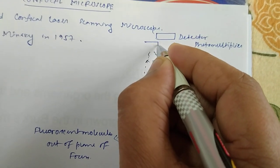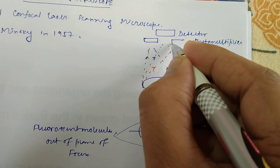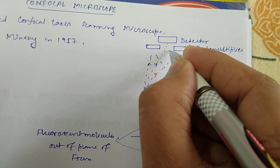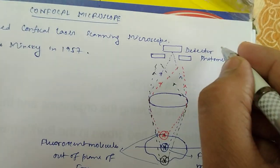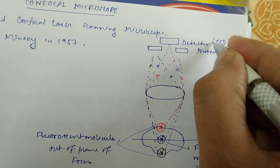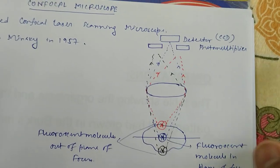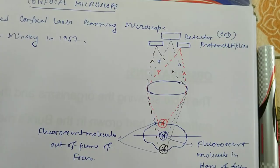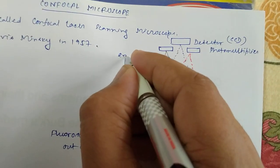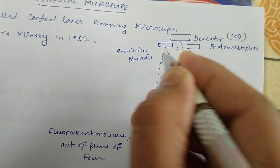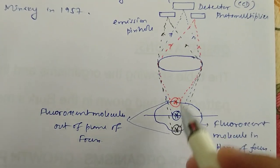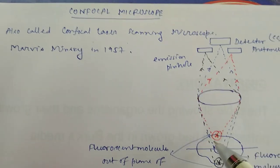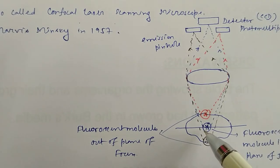In confocal microscopy, there are two pinholes located just before the detector. Through this pinhole gap, only the in-focus blue light reaches the detector — which is basically a CCD detector or digital camera. The red and black out-of-focus light will not pass through this emission pinhole. So only the specific object that is in focus will be received by the detector, and that is why it is called confocal laser scanning microscopy — because it scans every region of the specimen, giving a clearer vision.